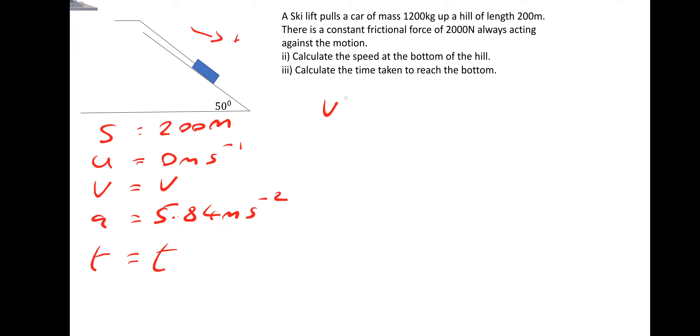That would be V squared is equal to U squared plus 2AS. If we put our numbers in, V is equal to the square root of, now U is zero, so that goes. So it's the square root of 2 times A times S. So 2 times acceleration, 5.84, multiplied by the distance, 200 meters, gives us a frighteningly fast velocity of 48 meters per second, rounded up to two significant figures.